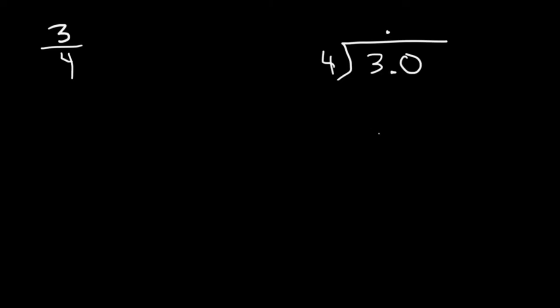Now how many times does 4 go into 30? Well, we know that 4 times 7 is 28. 4 times 8 is 32. That's too much. It's greater than 30. So 4 goes into 30 7 times. 4 times 7 is 28.